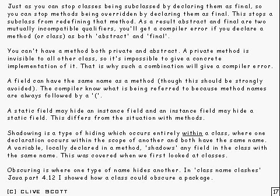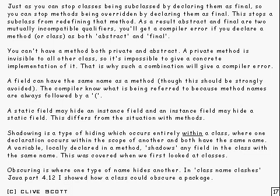If you declare a class as final, it means it can't be subclassed. There's a similar mechanism for methods: if you declare a method as final, it can't be overridden if it's an instance method, and it can't be hidden if it's a static method. As a result, the keywords 'abstract' and 'final' are mutually incompatible, and you'll get a compiler error if you declare a method or class as both abstract and final.